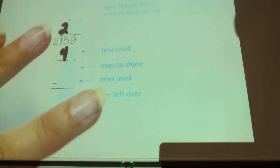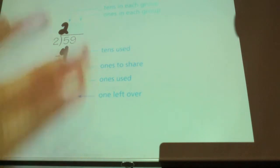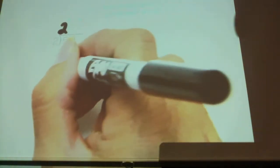How many did I use to put in those groups? Four. So the four goes here. I used four tens. How many tens are left over? One. Right? So that's going to go right here. It makes sense. Five minus four equals one.